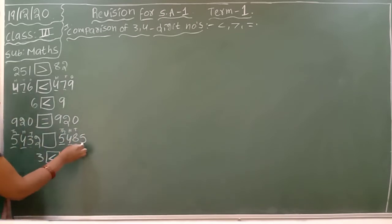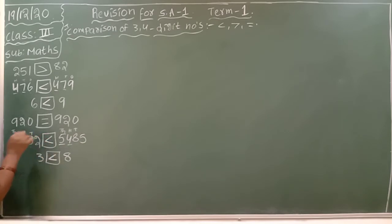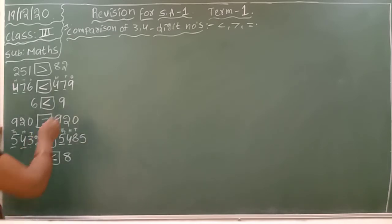Here 8 is the big number, means big number side opens, small number side closes. Same like this you have to keep the symbols.